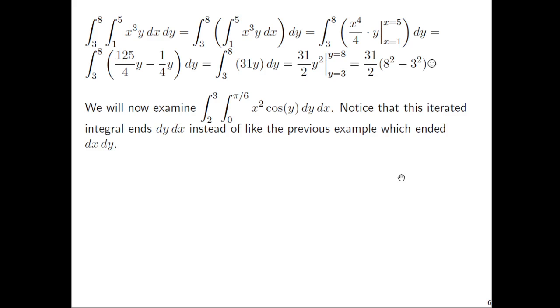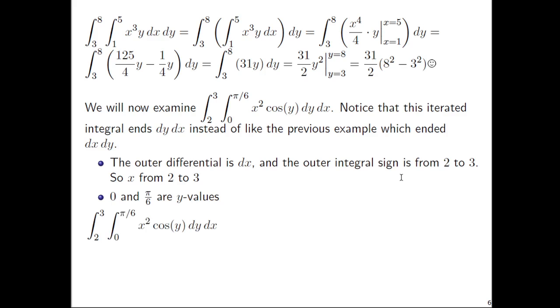Let's now examine ∫₂³ ∫₀^(π/6) x²cos(y) dy dx. Notice that this iterated integral ends dy dx instead of dx dy like the previous example. The inner integral in this new example is dy, so the outer differential is dx. The outer integral corresponds to x from 2 to 3, and the inner one has y from 0 to π/6. We just want to clarify what's x values and what's y values.